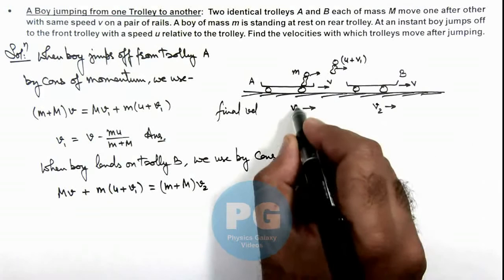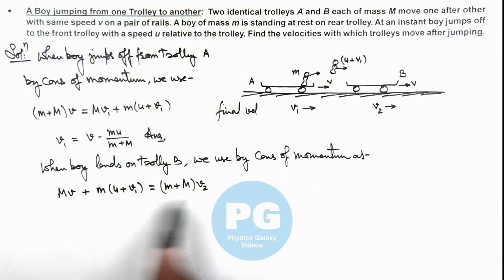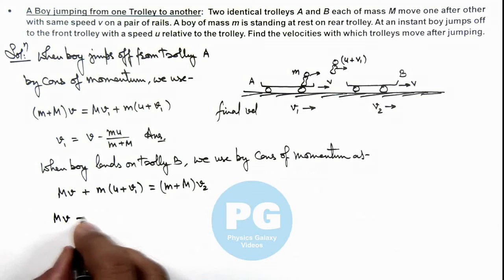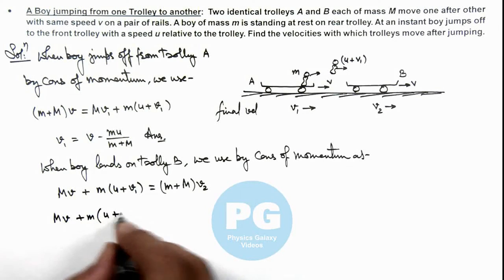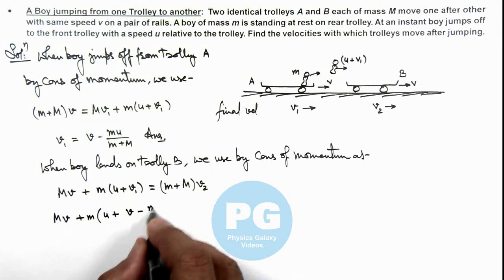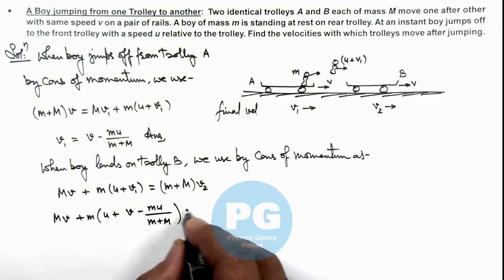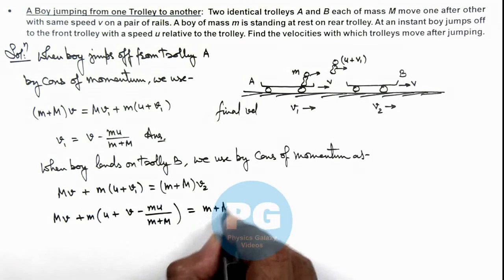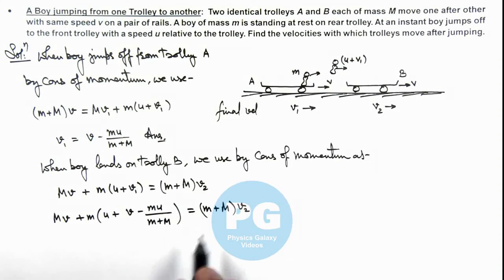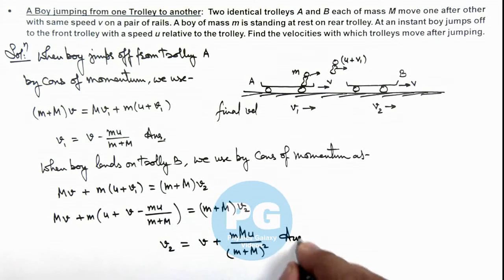If we substitute the value of v₁ here, we'll get the value of v₂. This gives us Mv + m(u + v₁), where v₁ = v - mu/(m + M), equals (m + M)v₂. If we simplify this and calculate v₂, the final result is v plus mMu divided by (m + M)². I'm leaving this calculation part for you to solve and get the final result of this problem.